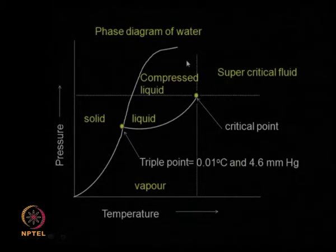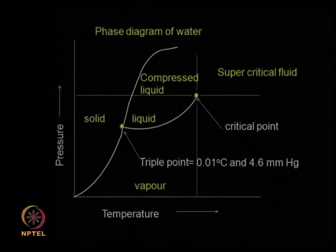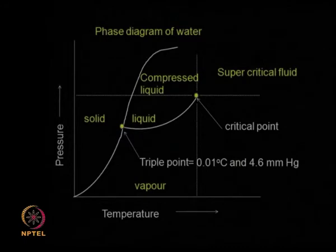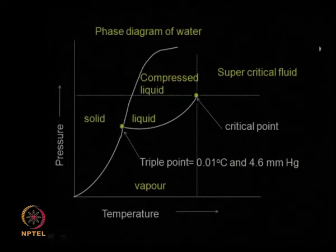Supercritical fluids — such as supercritical CO₂ and supercritical water — have both the useful properties of liquid and gas. Supercritical carbon dioxide has become very important in extraction processes, where it can effectively extract natural product metabolites or useful phytochemicals without using high temperatures that might denature or deactivate sensitive materials. The supercritical fluid region is above the critical point where liquid and vapor behave as a supercritical fluid.